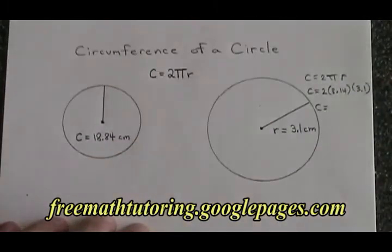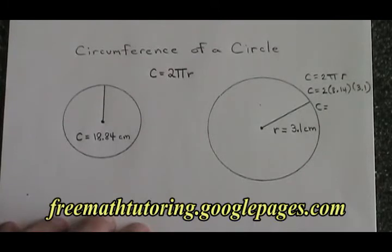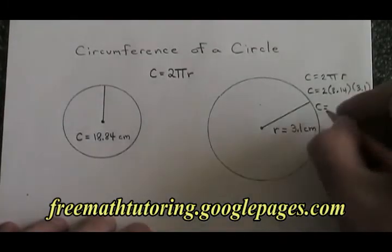To find my circumference, I just have to multiply. 2 times 3.14 times 3.1 is equal to 19.468.